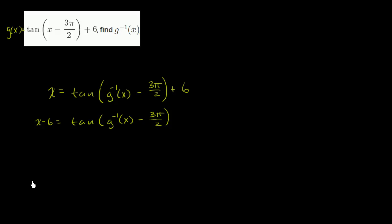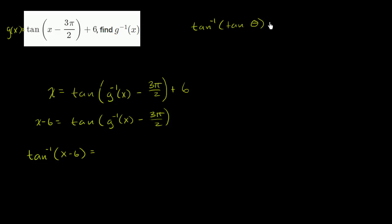Now let's take the inverse tangent of both sides. The left-hand side becomes inverse tangent of x minus 6. On the right-hand side, the inverse tangent of tangent — if we restrict the domain in the proper way — is just going to be the input into the tangent function. So the inverse tangent of tangent of theta equals theta, if we restrict the domain correctly. So the right side becomes simply g inverse of x minus 3π/2.